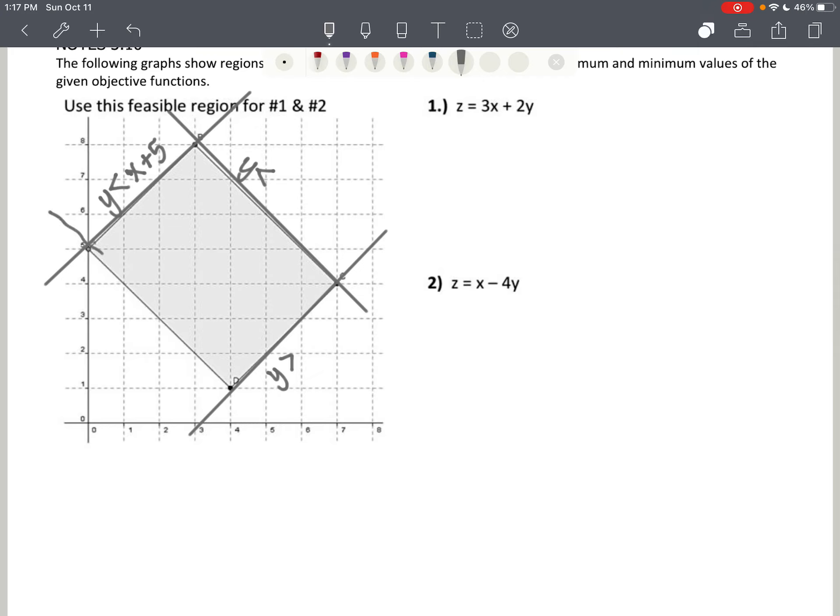And then we have our last inequality, y is greater than, and then this one, we could do this, y is greater than x plus 5. Now the only reason I did y is less than and y is greater than is because I could write those equations of those boundary lines very easily.